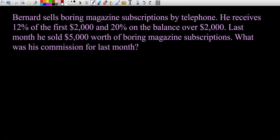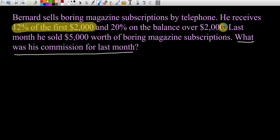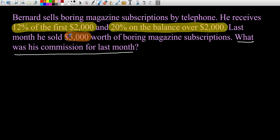Bernard sells boring magazine subscriptions by telephone. He received 12% of the first $2,000 and 20% on the balance over $2,000. Last month, he sold $5,000 worth of boring magazine subscriptions. What was his commission for last month? This is a little trickier. It's 12% of the first $2,000 and 20% of anything over $2,000.